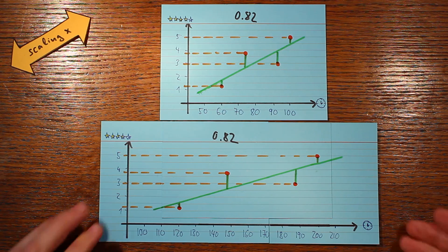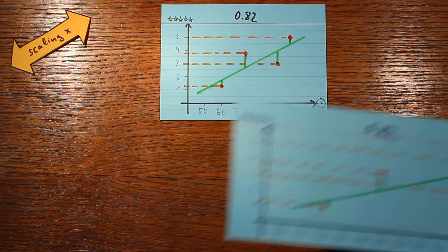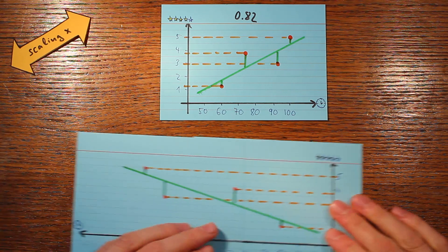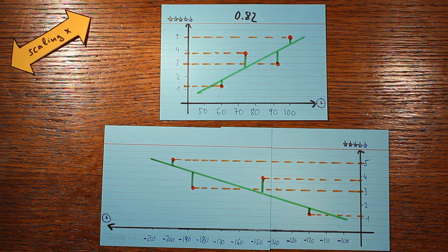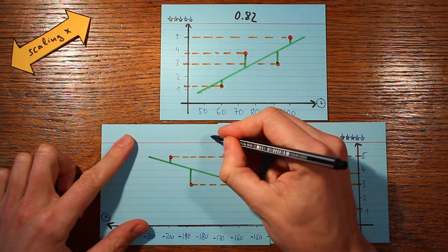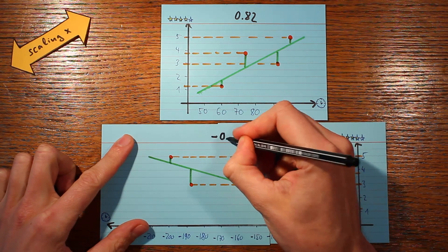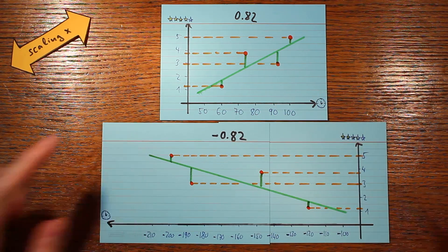Now what happens if we multiply the x values by a negative constant instead? Here I've taken all the x values and multiplied them by minus 2. In this case the sign of the correlation coefficient flips, because now the slope faces downwards — so the correlation coefficient is negative. But the scatter along the y-axis and the scatter around the fitted line have stayed the same, so the magnitude of the correlation coefficient is unchanged.